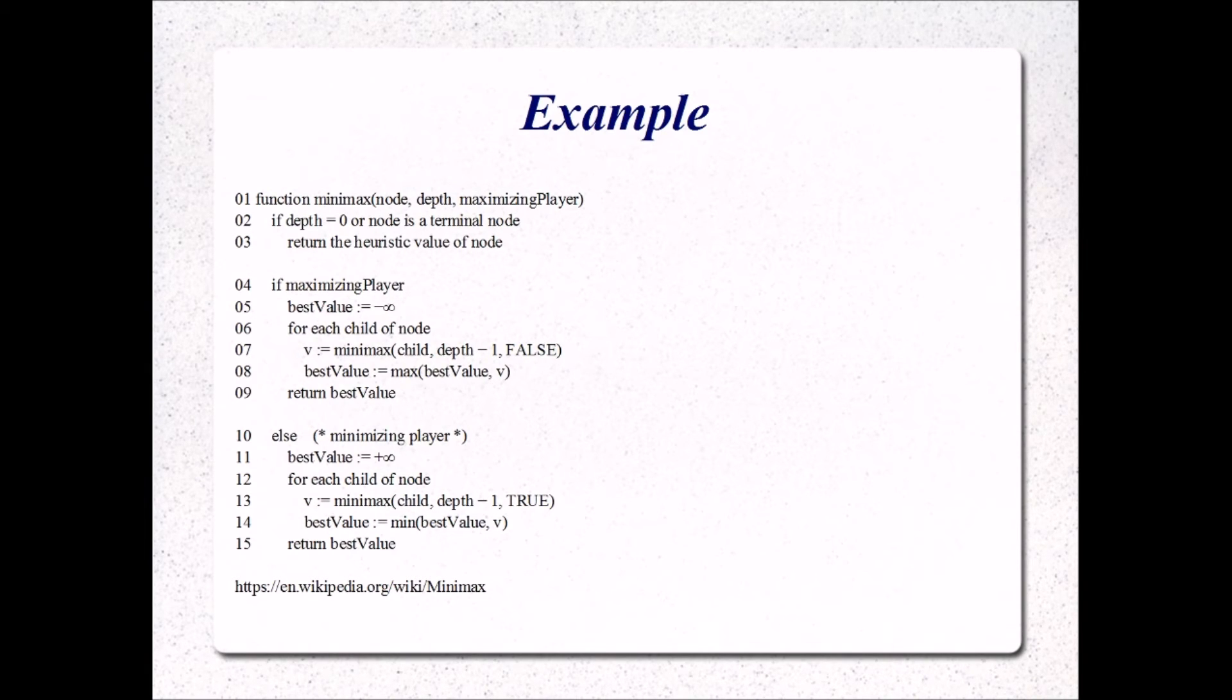So depth in a more complicated version of the Minimax algorithm, like say if you're playing checkers or chess where there's millions of possible board states that you would have to evaluate if you did the entire game, the depth is the number of moves ahead to look. So if there is a possible win within the next, say, three moves, your AI would lean in that direction.